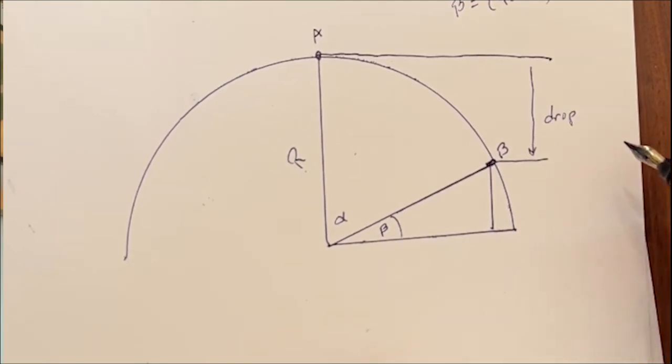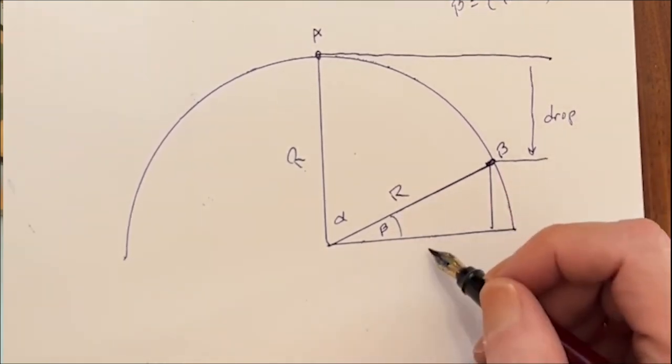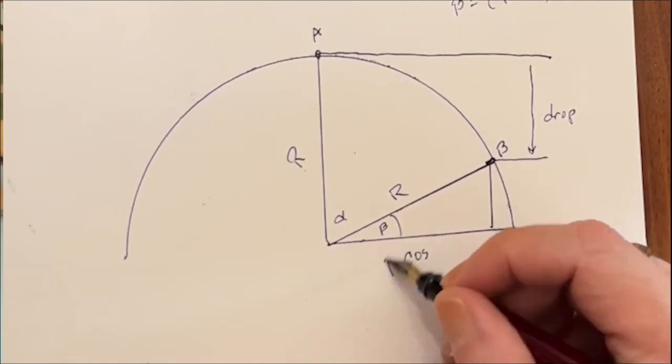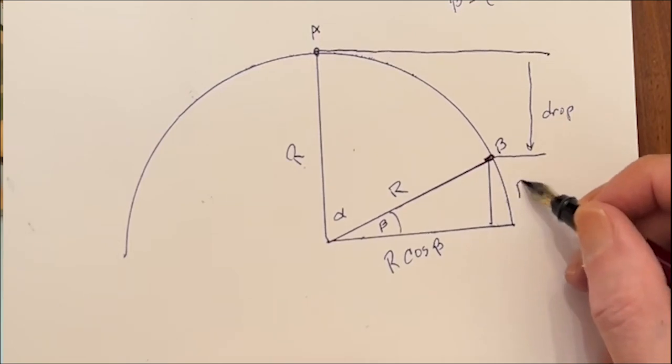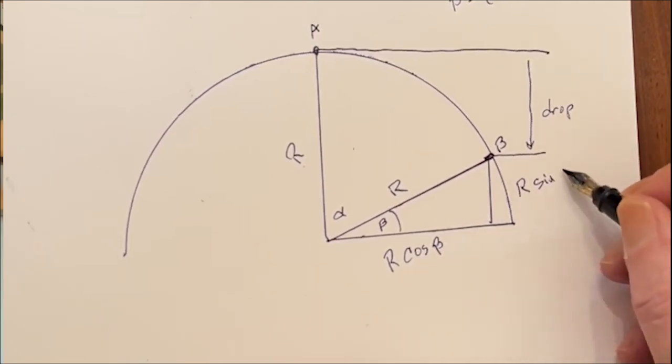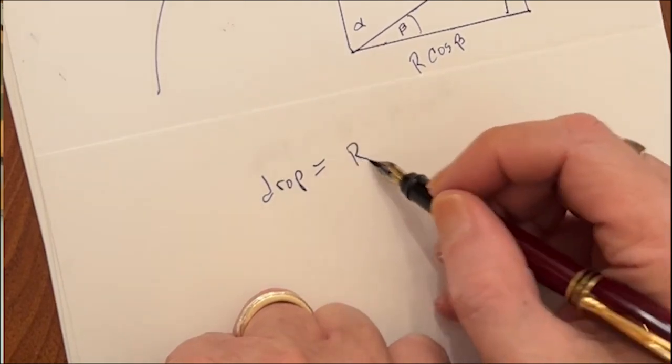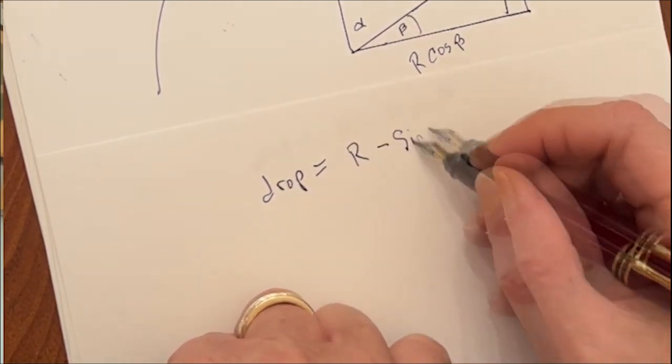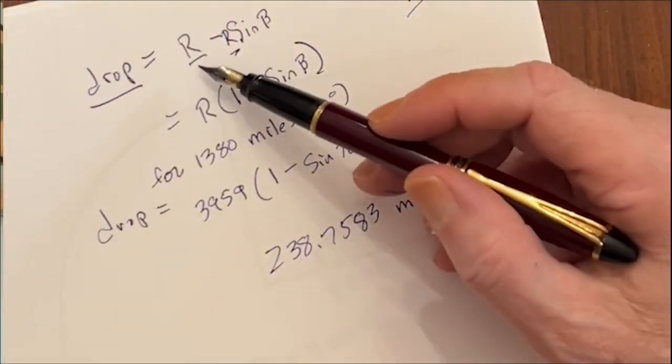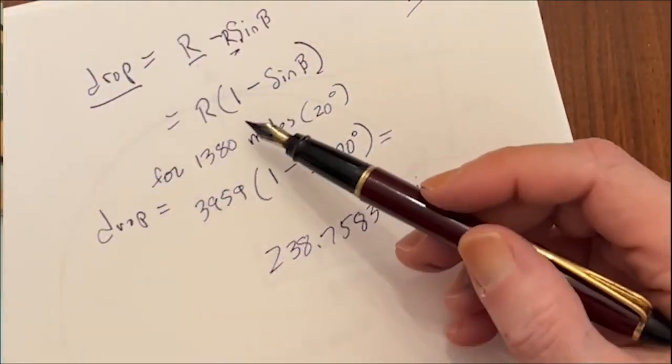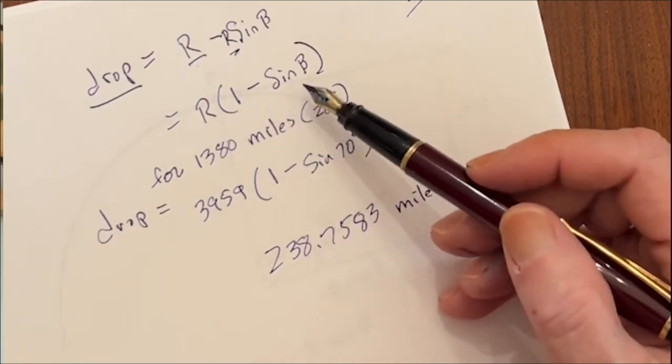Now we recall from our unit circle in trigonometry, if this is radius r, then this would be the cosine. Well, it would be r times the cosine of angle beta, and this would be r times the sine of angle beta. So the drop would equal the radius minus the sine of beta times the radius. So getting back to our equation, notice that there's an r in both of these terms. So we can actually pull that out and make it r times 1 minus the sine of angle beta.